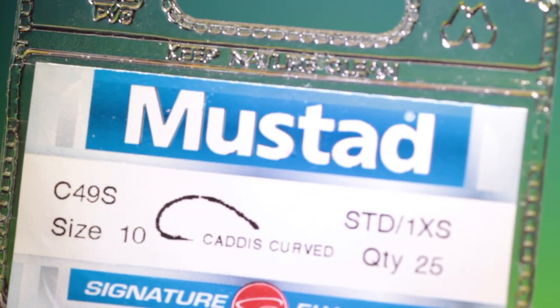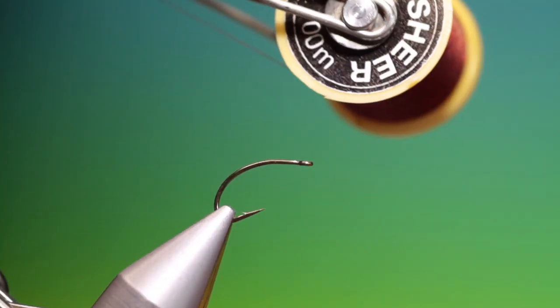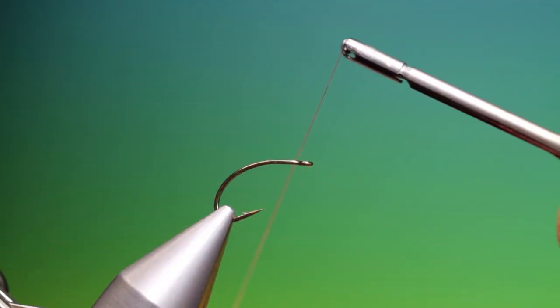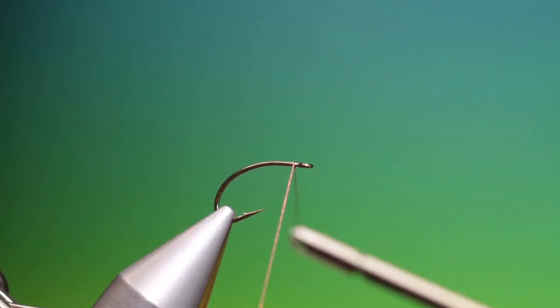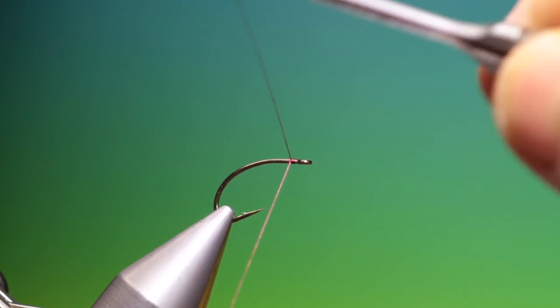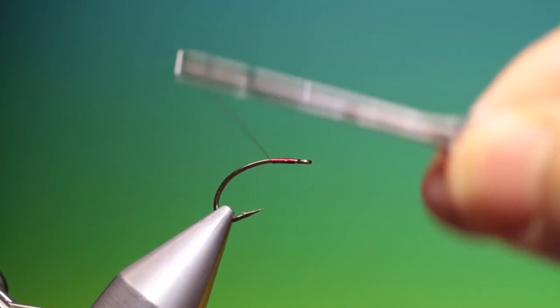Okay we'll start with the Mustard C49S curved caddis. This is sheer 40 nought brown, we'll just put a little bit of tying thread at the front. This is one of my most essential patterns.